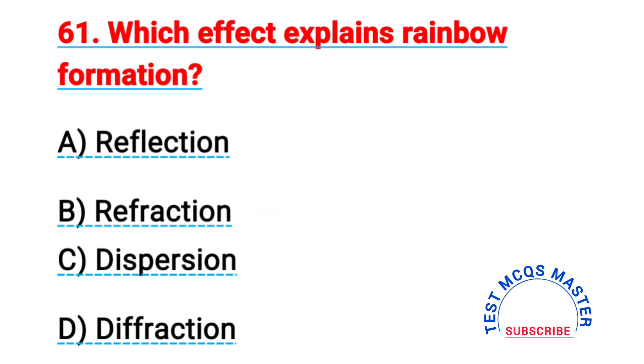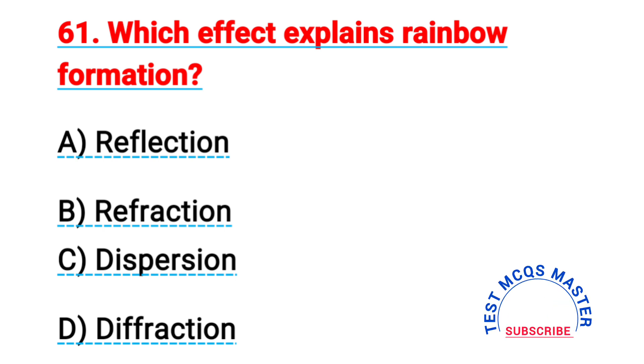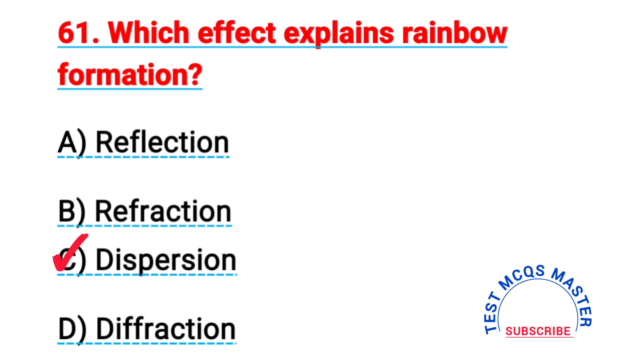Question number sixty-one: which effect explains rainbow formation? The right answer is C, dispersion.